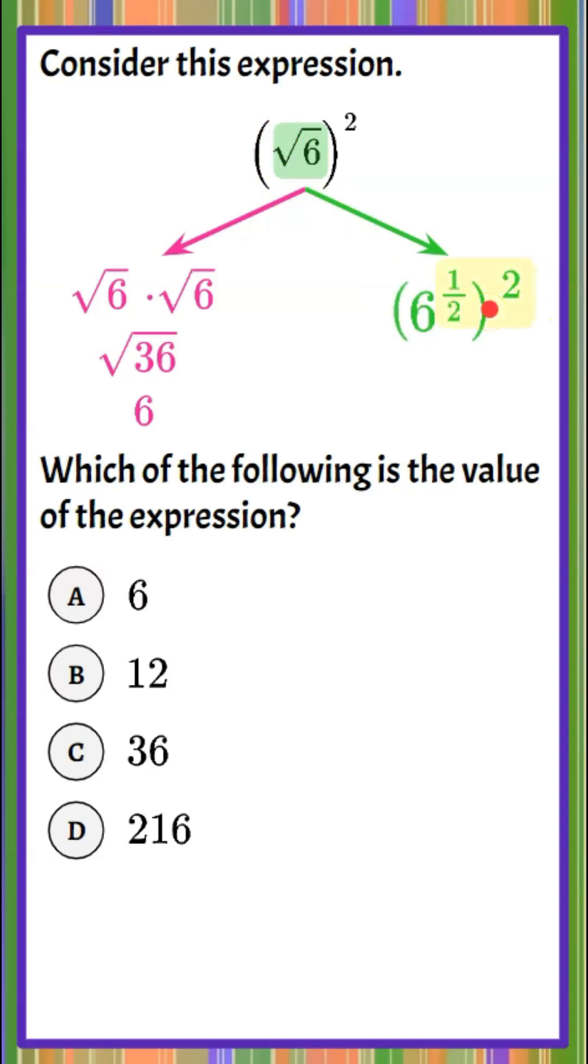When we have exponents, power to a power, we're going to multiply those values. 1 half times 2 is 1, so we're left with a power of 6 to the 1, which is also 6. Our answer choice is A.